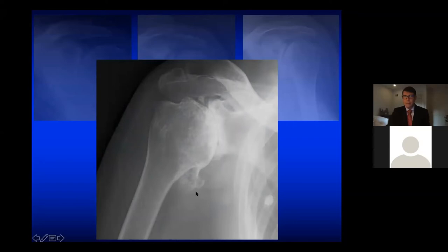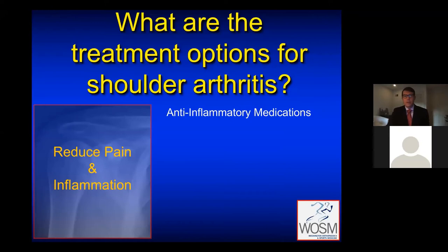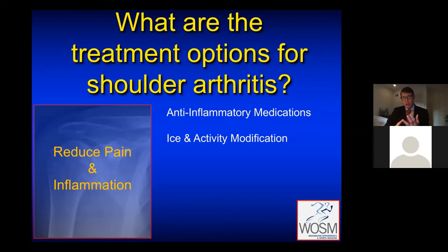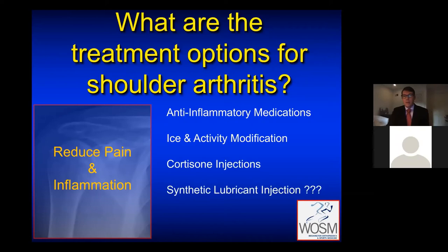What are our options when treating arthritis? We want to reduce pain and inflammation, so as a first-line measure we use anti-inflammatory medications, icing the shoulder, and careful activity selection. It's remarkable how many patients can simply alter their fitness regimen — perhaps doing too much planks, push-ups, and chest press, or swimming too often or playing too much singles tennis. If we modify that and get them to cross-train using other muscles, they can still be fit and find their pain reduced for a sustainable period. We also talk about cortisone injections. Synthetic lubricant injections have recently been demonstrated in an American Academy of Orthopedic Surgeons clinical practice guideline to be of no benefit in the shoulder, and Medicare and insurance do not cover them.